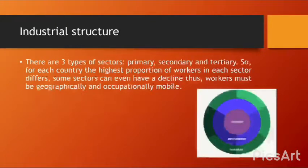Industrial structure: there are three types of sectors — primary, secondary, and tertiary. For each country, the highest proportion of workers in each sector will differ, as some sectors may decline. For example, a country may experience a decline in its secondary sector and shift towards the tertiary sector. Workers may therefore need to be more geographically and occupationally mobile — able to change occupation and move from region to region.